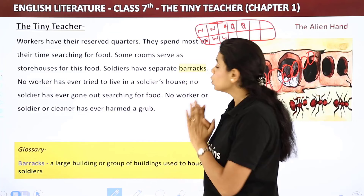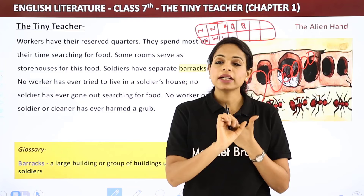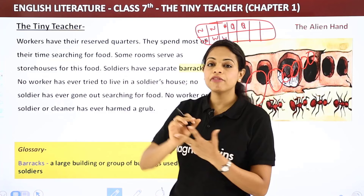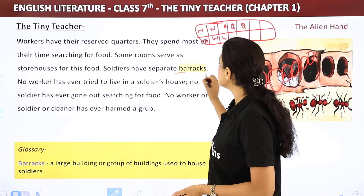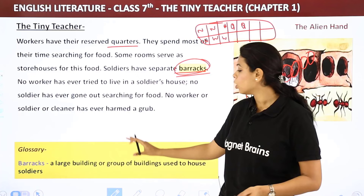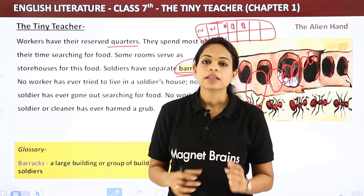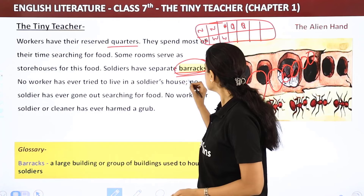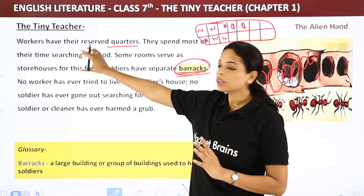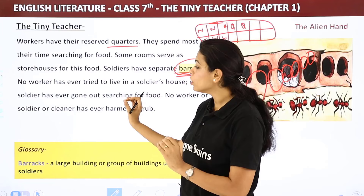Soldiers have separate barracks. In the ant colony we have the queen ant, then we have soldiers and workers. Soldiers live in their barracks — no soldier will live in a worker's quarter and no worker will live in the soldier's barracks. 'Barracks' means a large building or group of buildings used to house soldiers.